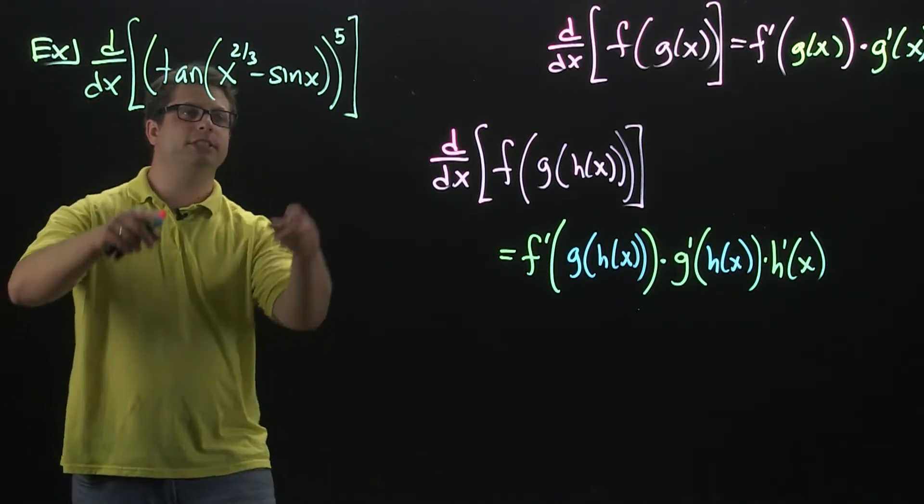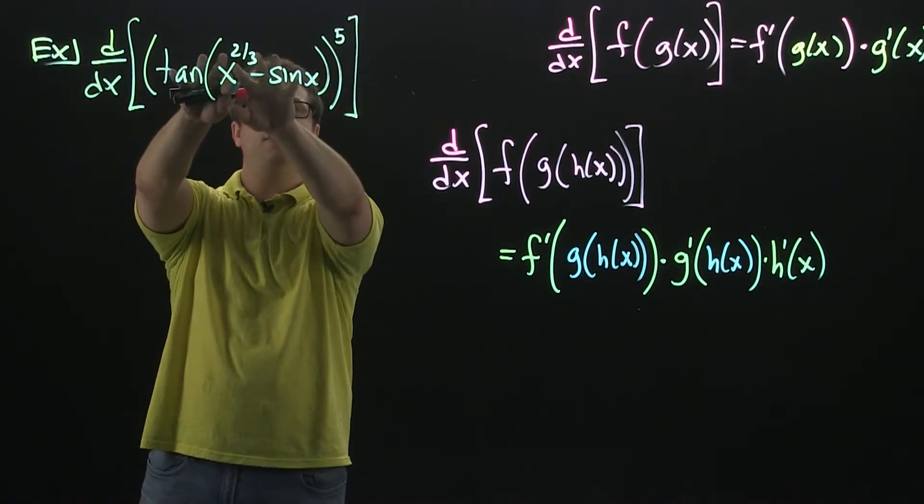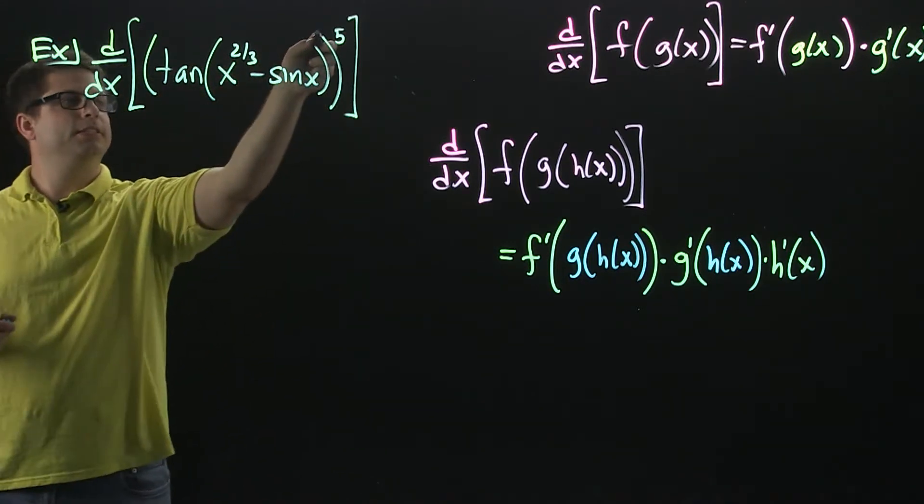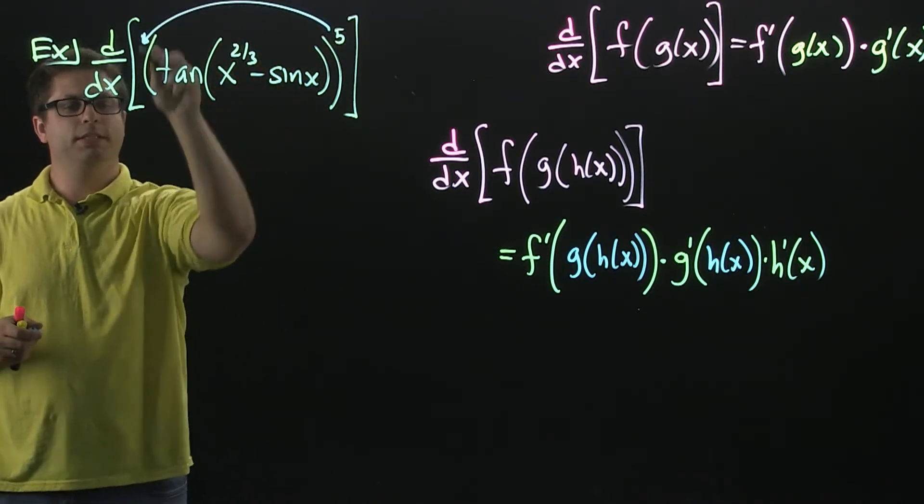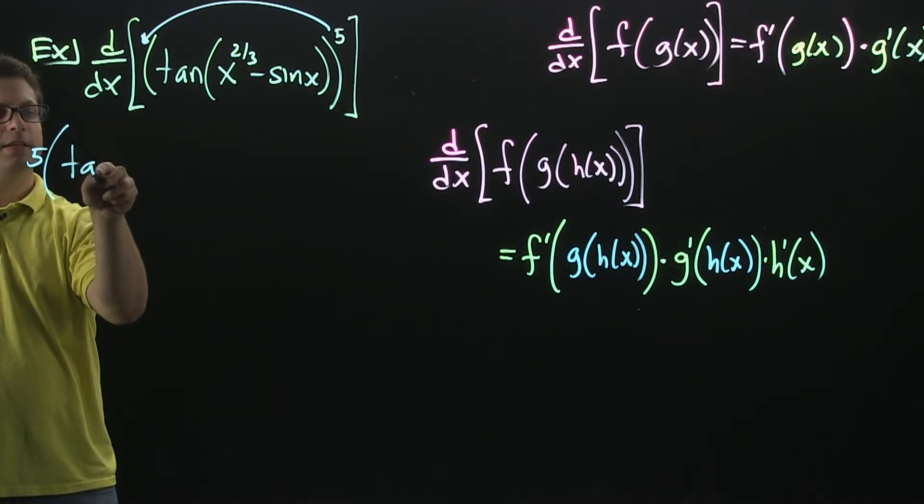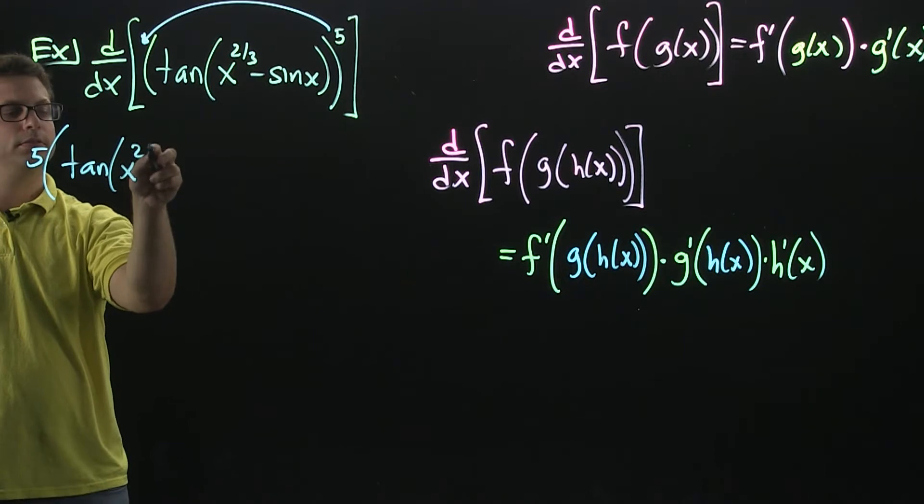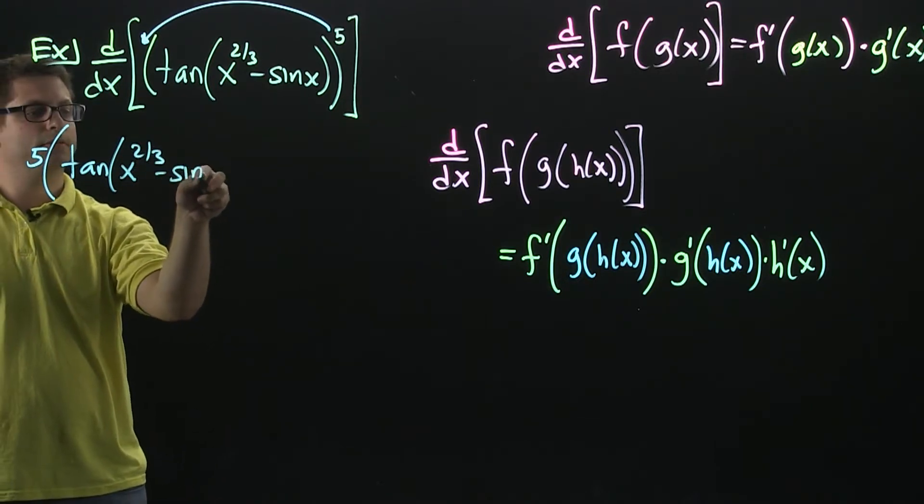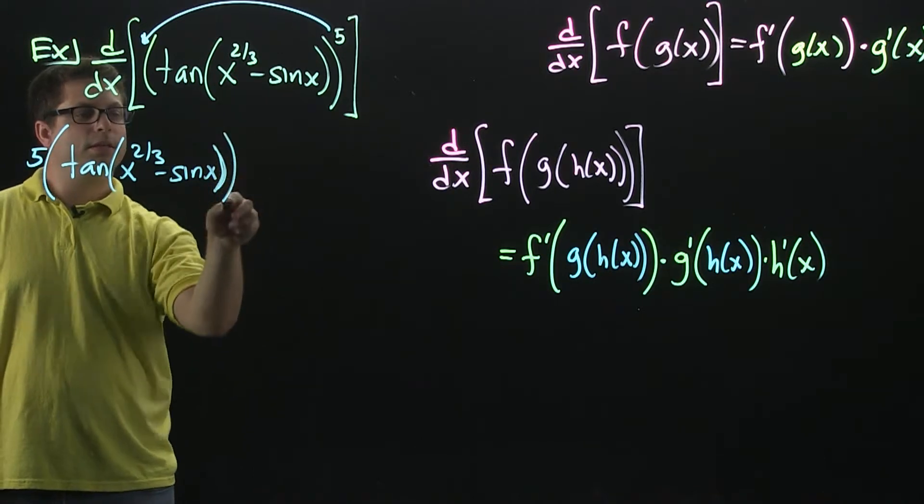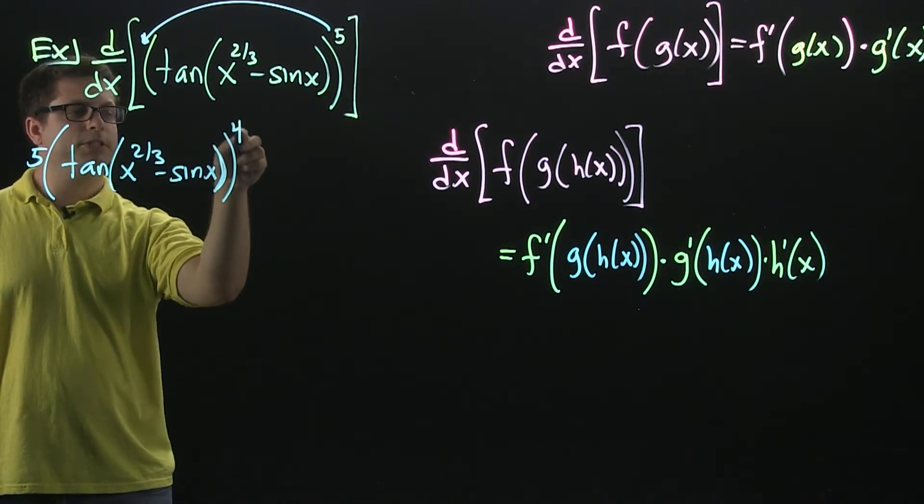Okay, let's start with the outside function, which is all this stuff raised to the fifth power. We're going to bring this five down in front. We're going to leave all of the inside alone. And then subtract one off the exponent, which gives me four.